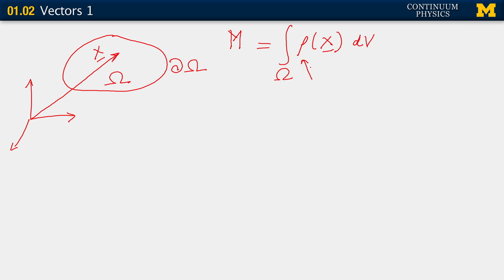So in here, rho is what we know very well as the mass density. And dV is what we will call the elemental volume, or the volume element.